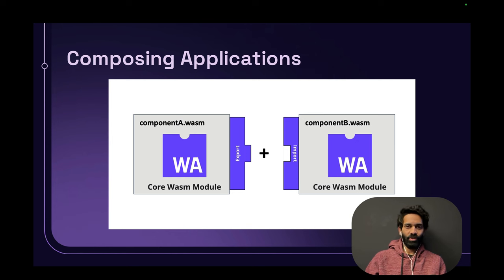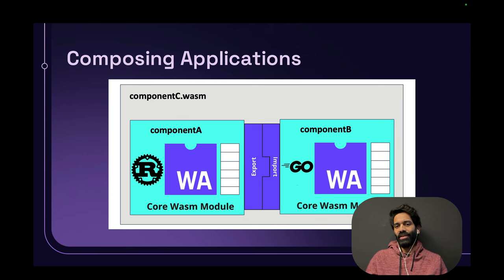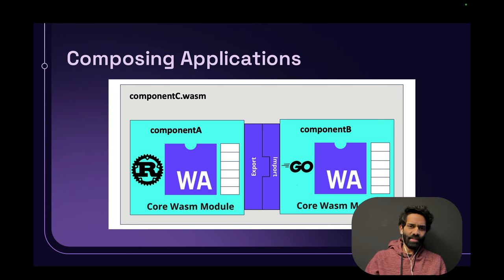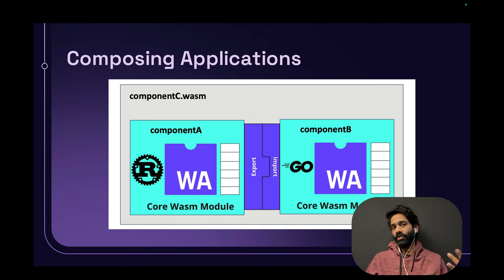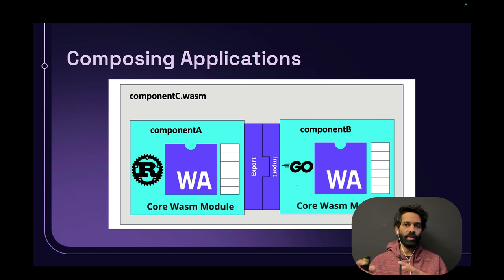You see component A.wasm on your left and component B.wasm on your right — both core WASM modules. One can export the thing it does and the other can import the thing it wants. This way you can write them in Rust and Go and have them work with each other to create a new component, component C. The stack in white next to the WebAssembly logo is your memory. Your export and import are not interacting with what your business logic is working on — because this is security sandboxed by default, we're creating interfaces for each component so they can talk to other components.